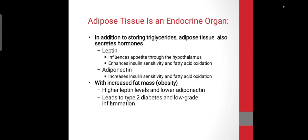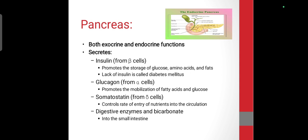Adipose tissue is an endocrine organ. Adipose tissue hormones secrete leptin and adiponectin. Leptin acts in the hypothalamus and adiponectin enhances insulin sensitivity and fatty acid oxidation.